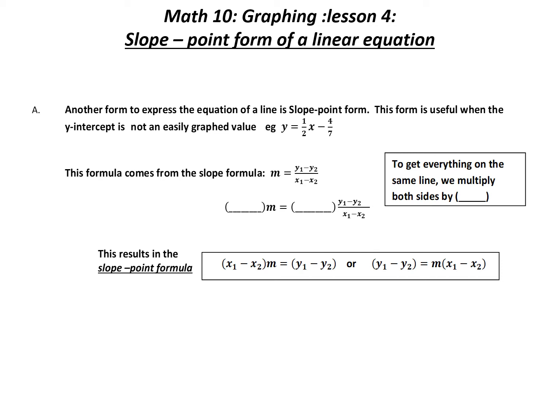Graphing slope-point form of a linear equation. Another form we can use to express the equation of a line is slope-point form. This form is useful when the y-intercept is not an easily graphed value. For example, y equals one-half x minus four-sevenths — four-sevenths is not something that is easily graphed accurately.